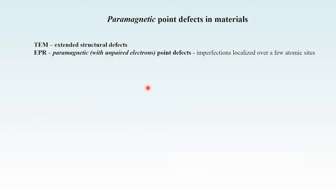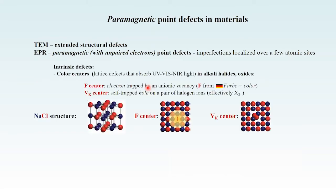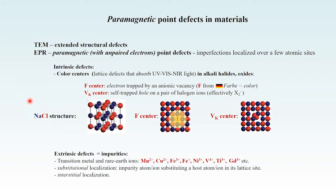EPR spectroscopy investigates point defects which are paramagnetic, and I will give you some important examples. The simplest intrinsic paramagnetic center is an electron trapped by an anionic vacancy — the F center — as seen in the cubic structure of sodium chloride. The properties of color centers in different crystals have been intensively studied by EPR for many decades. Other important paramagnetic point defects are transition metal and rare earth ions with specific charge states. They can be localized, substitutional or interstitial in a lattice, and EPR is able to distinguish between different localizations.